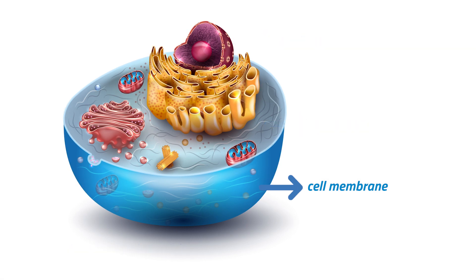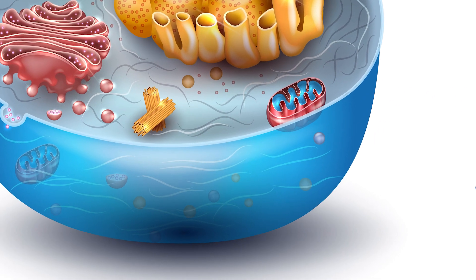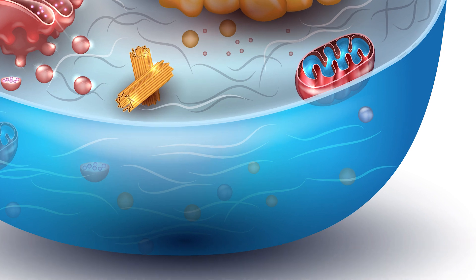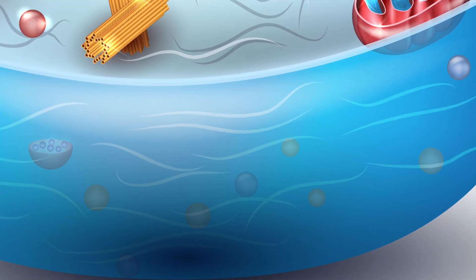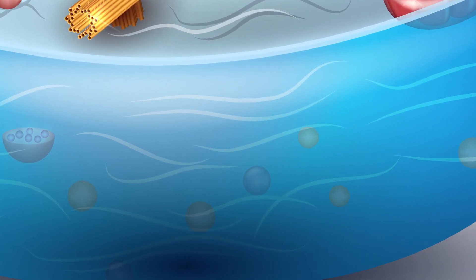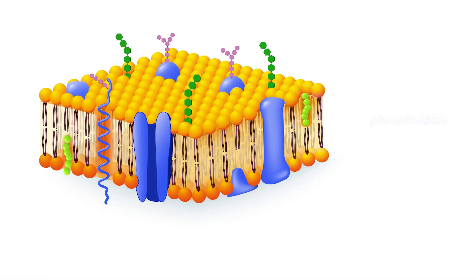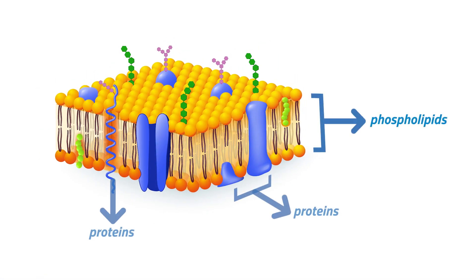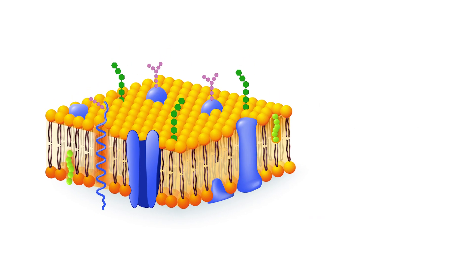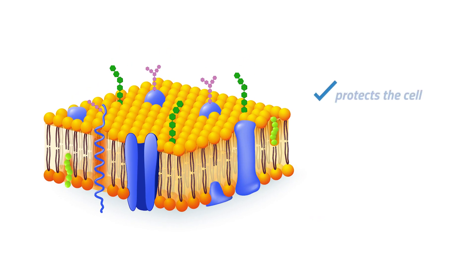The cell membrane, also called the plasma membrane, is a thin, flexible, and semi-permeable outer covering of the cell. It is made up of two layers of phospholipids and proteins randomly scattered in the phospholipid bilayer. The cell membrane is mainly for protection.